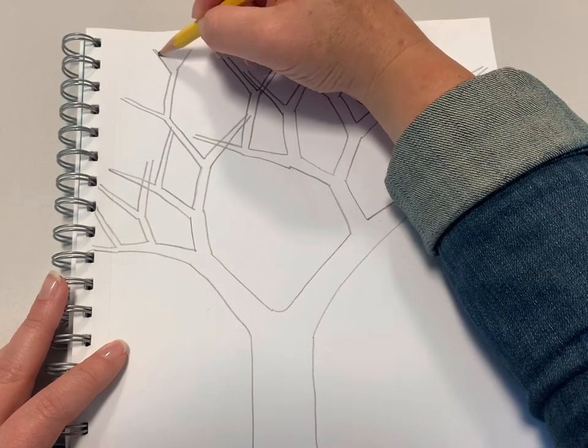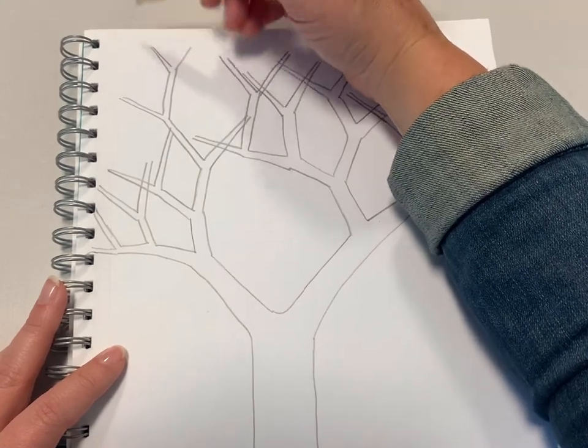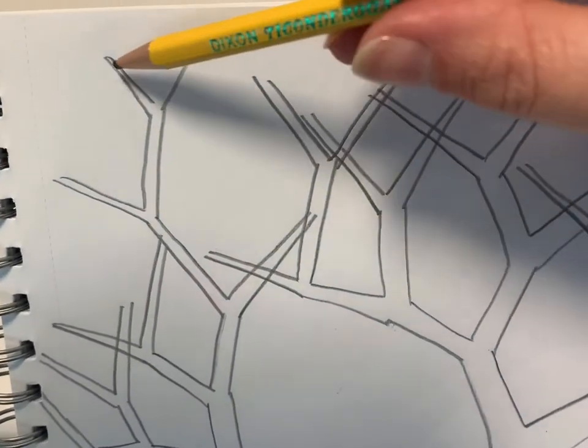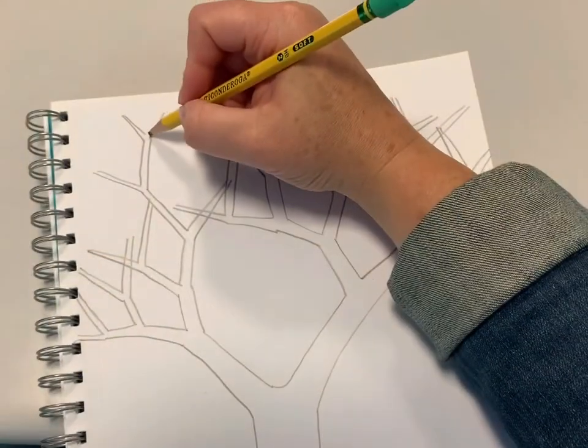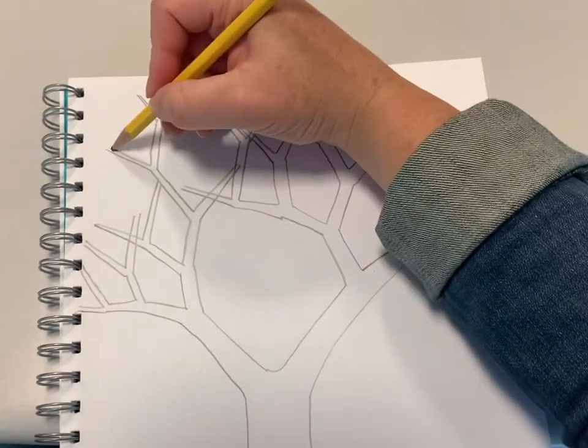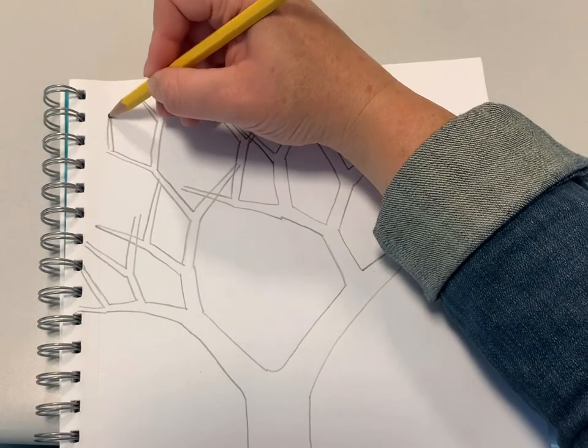Next, you're going to want to start to end your branches as they get closer to the top of the page. And here's how you do it: you just add a little point to the end of each one. So instead of branching it out, you actually just do the opposite and make it come to a little tip.